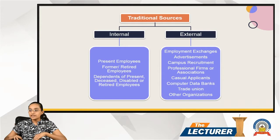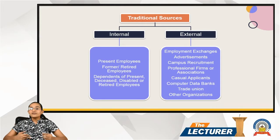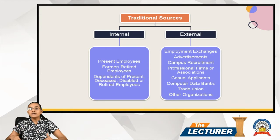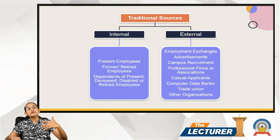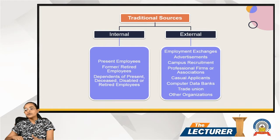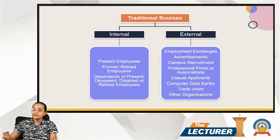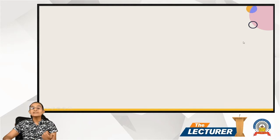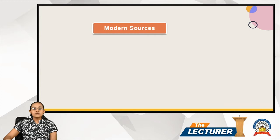Modern sources include computer data banks and internet-based recruitment through computer data banks. Other modern sources include trade unions, and employees from other organizations. Traditional and modern sources together form the full spectrum of recruitment sources.